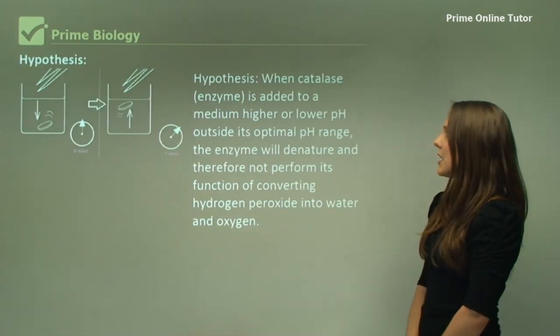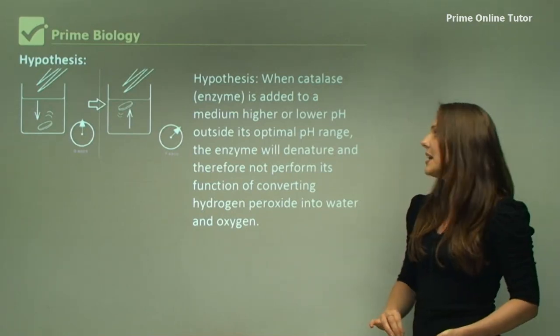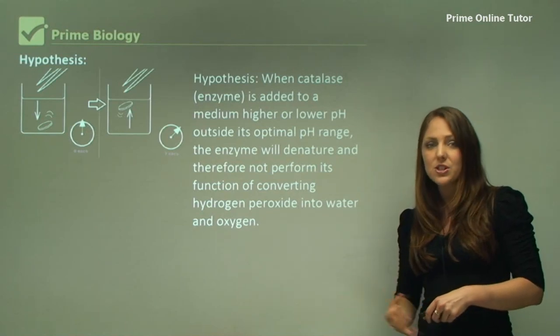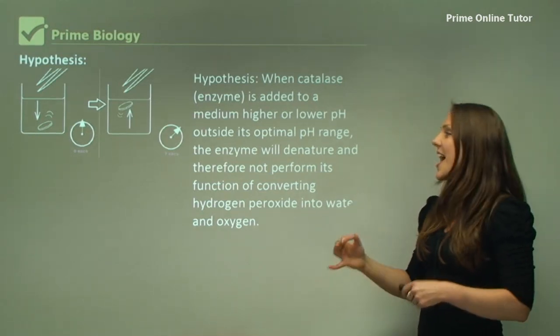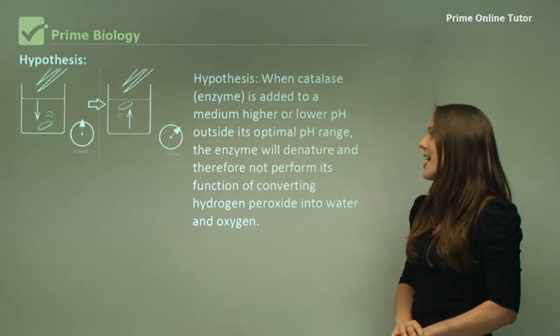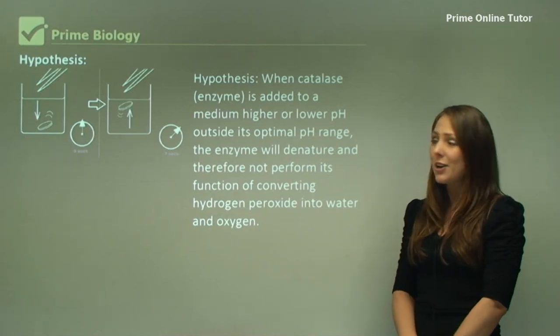Now a hypothesis: when catalase, which is an enzyme, is added to a medium higher or lower pH—when I'm saying medium I'm talking about a solution—when it's added to a lower or higher pH outside its optimum pH range, the enzyme will denature and therefore not perform its function of converting hydrogen peroxide into water and oxygen.